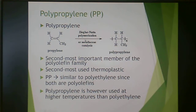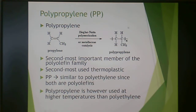This is typically done with Ziegler-Natta polymerization or metallocene catalysis, so not free radical, and made into polypropylene. So propylene, polymerization, polypropylene.